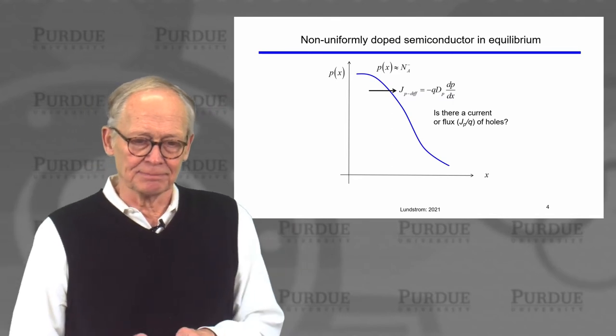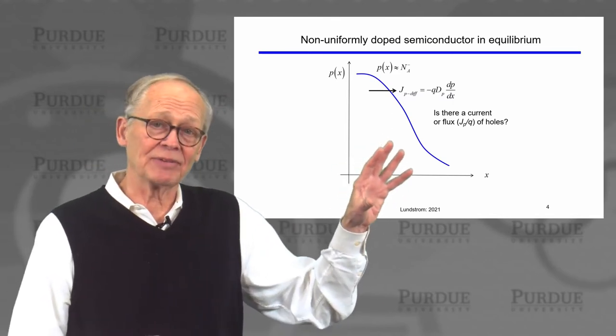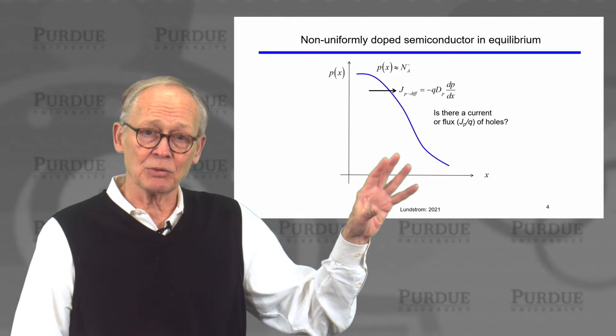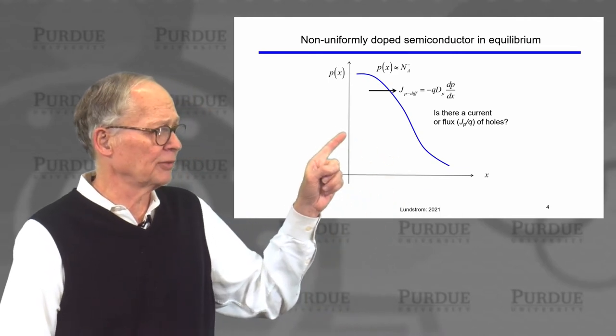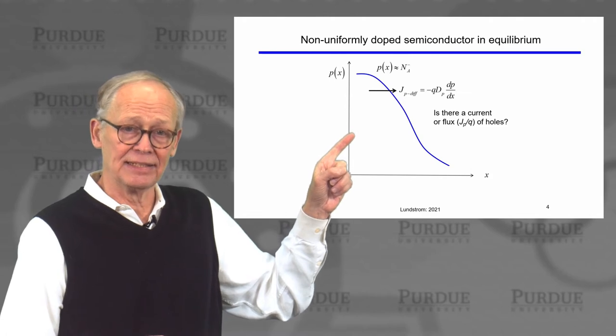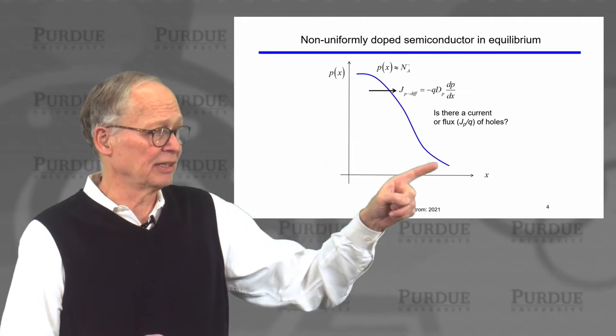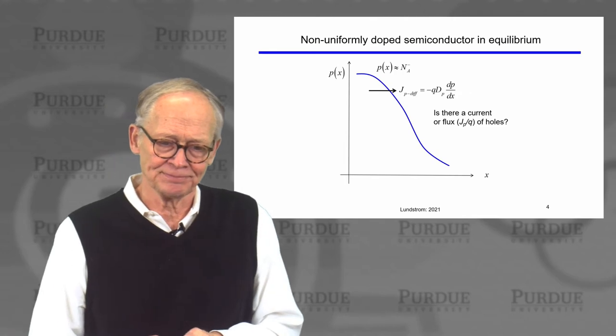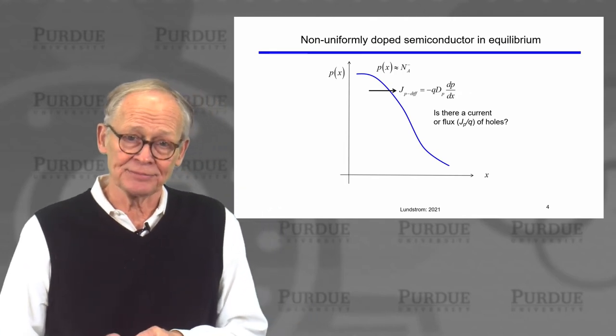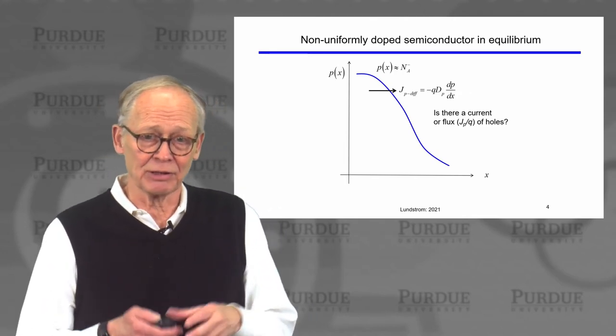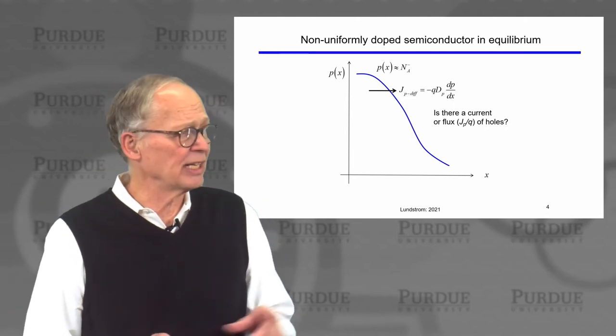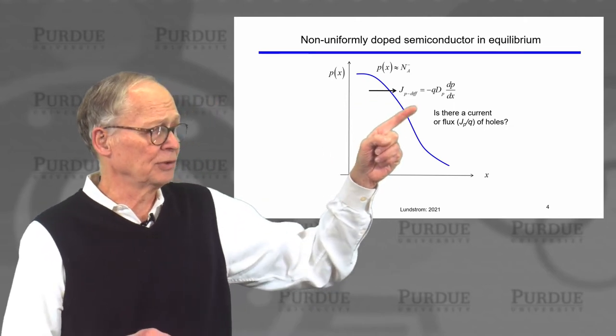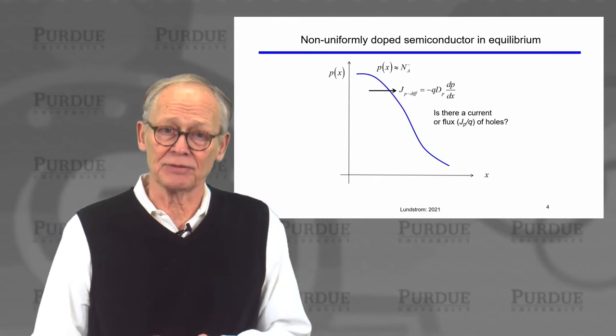So let's consider a problem here. Let's say that we have a semiconductor in equilibrium, doped non-uniformly, so it's doped more heavily with acceptors near x equals zero than it is in the bulk. So there's this gradient of the holes. Well, what's going to happen? Holes are mobile, they're in random thermal motion, they would diffuse down the concentration gradient, so holes will diffuse to the right. There will be a diffusion flux.